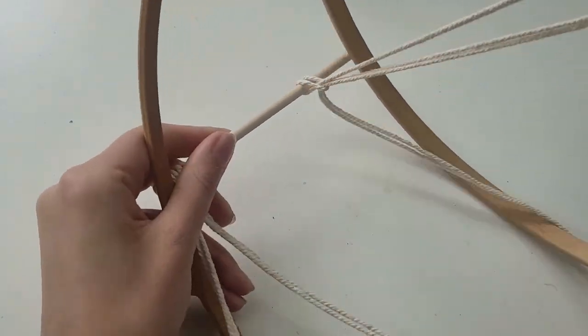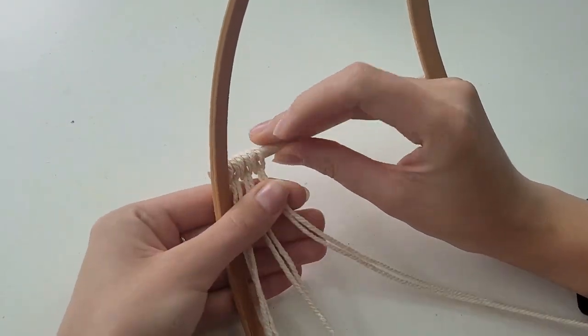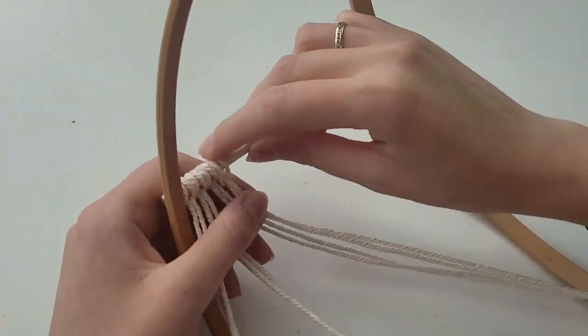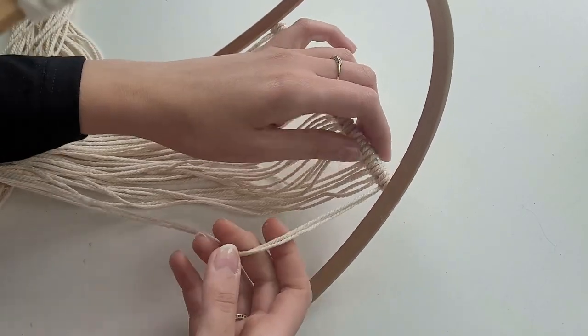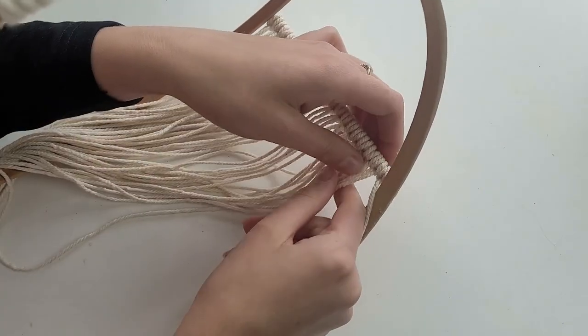I take one cord, fold it in half and attach to my dowel by creating lark's head knot. Always pull the cords starting from the same side of the dowel. All 20 cords are attached which means we have 40 loose cords for creating the design.